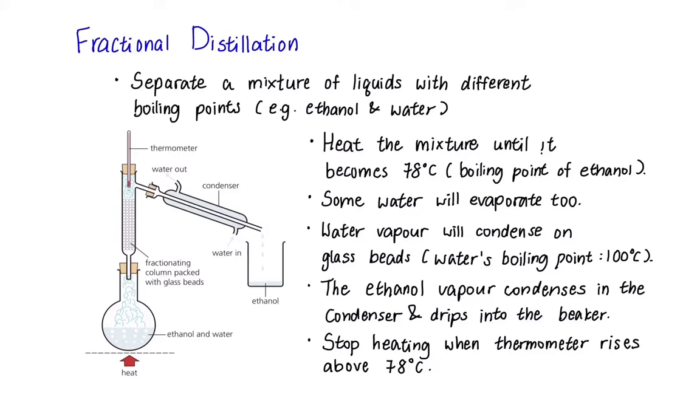Last separation method, fractional distillation, is quite similar to simple distillation except that it is used to separate a mixture of liquids instead of a solvent from a solution. There is a special condition to it, which is, the liquids mixed together should be of different boiling points. Ethanol and water mixture is the most common example for fractional distillation as ethanol's boiling point is 78 degrees Celsius while for water it is 100 degrees Celsius.